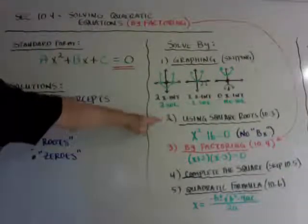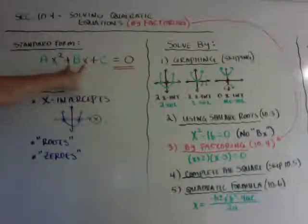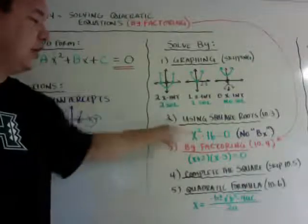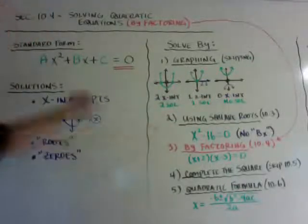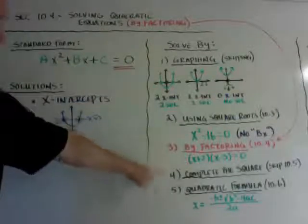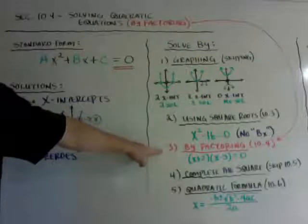We did solve by using square roots if there's no middle term, if there's no bx, and there's just the ax squared and the c, you can solve by square roots. But if there is a bx, you cannot do it that way, you have to go by either factoring, completing the square, quadratic. And we're skipping this one, so today we're doing solving by factoring.